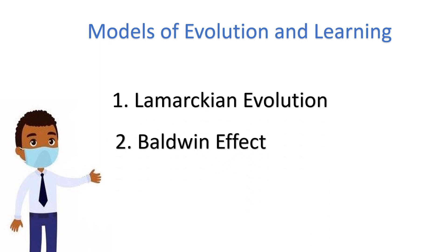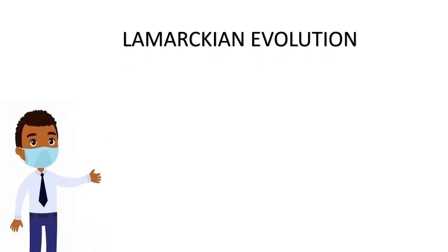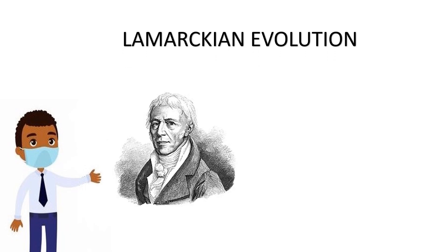Lamarckian evolution: Lamarck was a scientist who proposed that evolution over generations is directly influenced by the experiences of separate organisms during their lifetime. He mentioned that the experiences of an organism will directly affect the genetic makeup of its offspring.